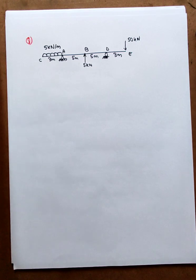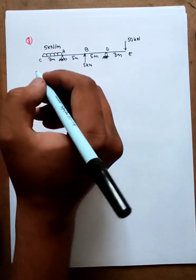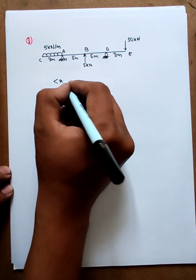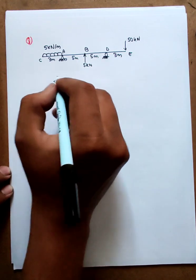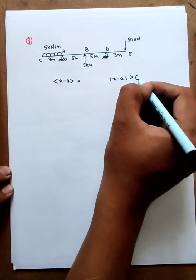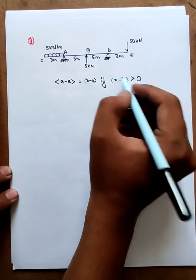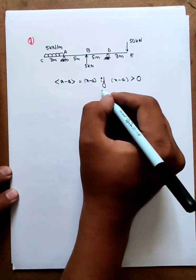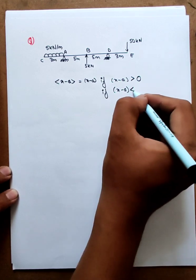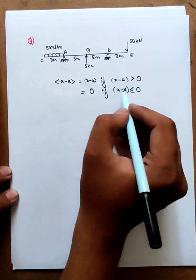This numerical method is going to solve the moment area method. We have this equation. If x minus a is greater than 0, it will be x minus a. If x minus a is less than or equal to 0, it will be 0.